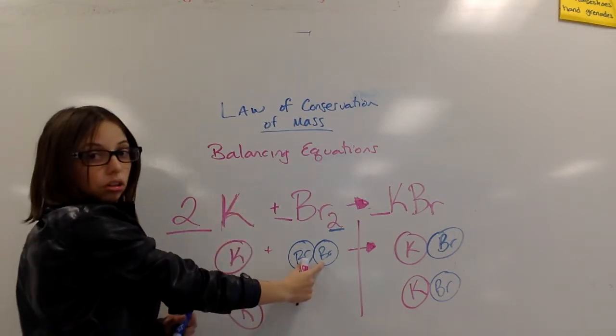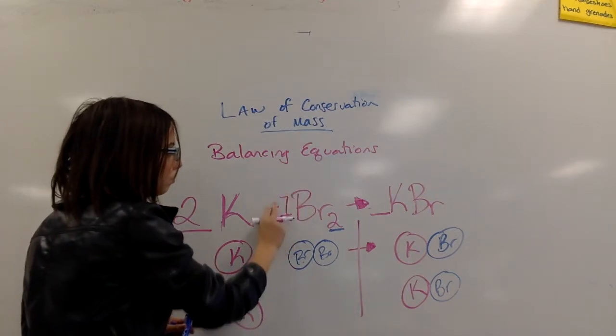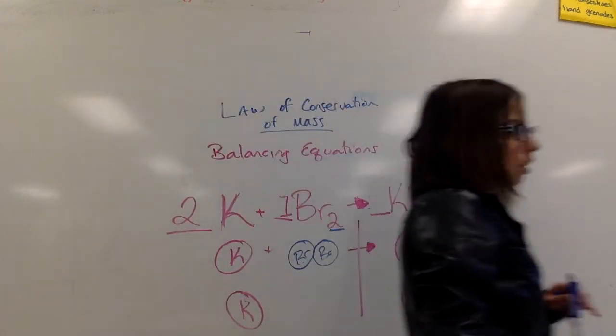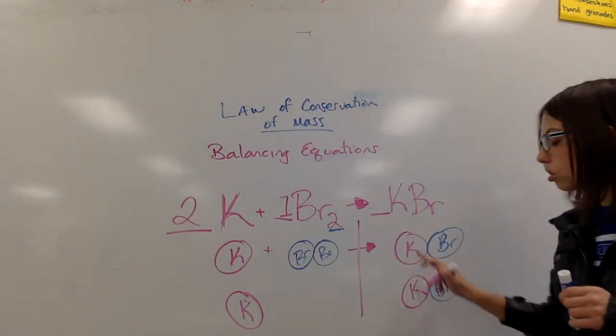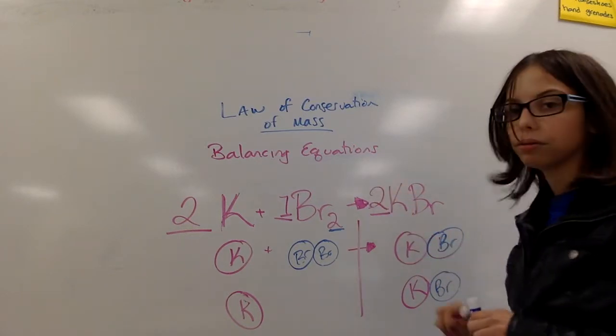I have only one picture of this diatomic bromine, so a coefficient of one. And on my product side, I have two sets or two pictures of potassium bromide, so a coefficient of two.